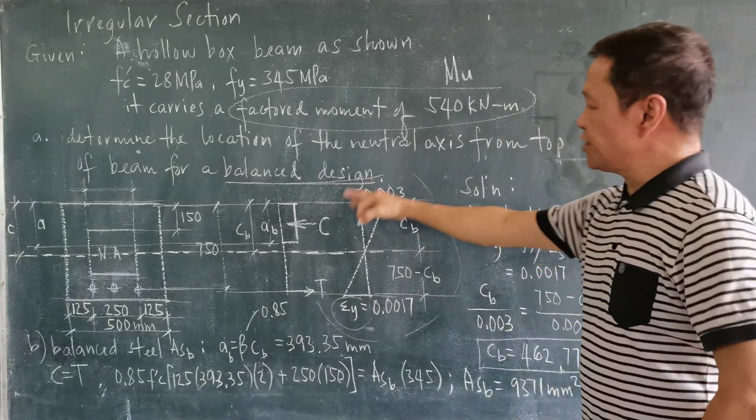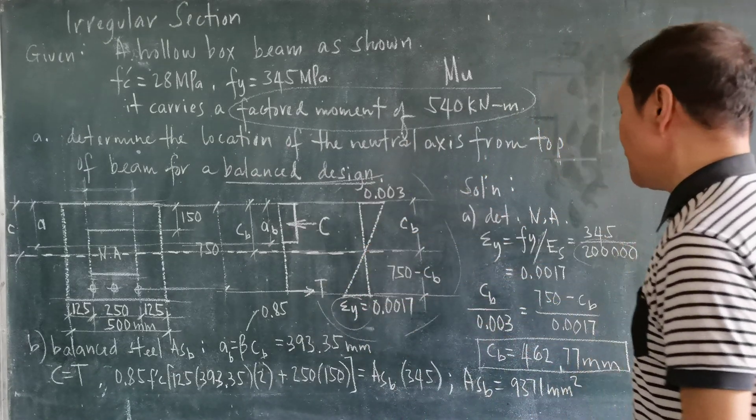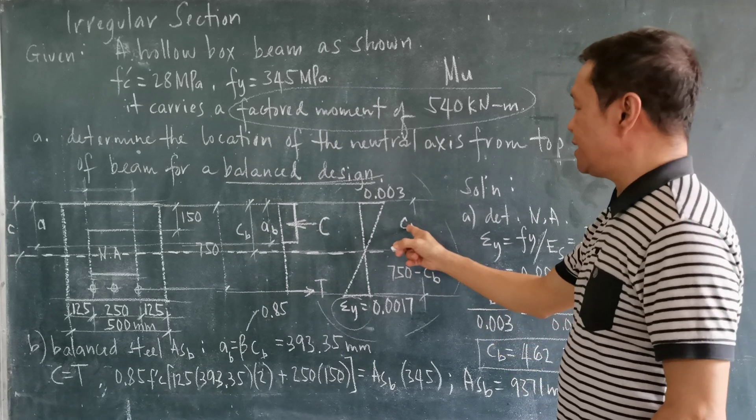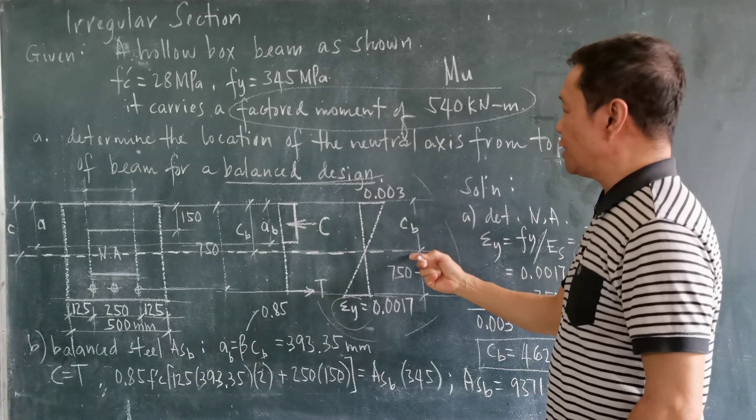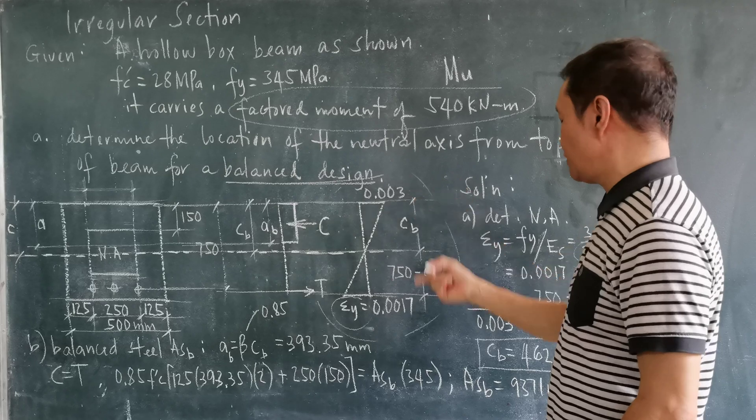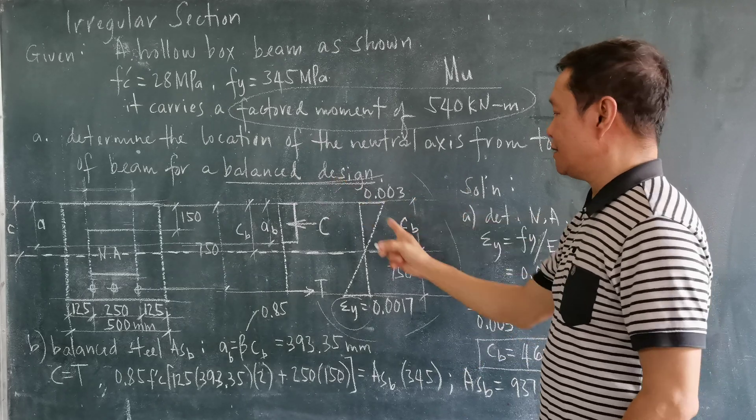Using this figure here, the strain diagram, we can now compute the C, which is the distance of the neutral axis from the top fiber under compression in balanced design.